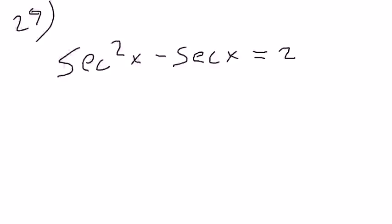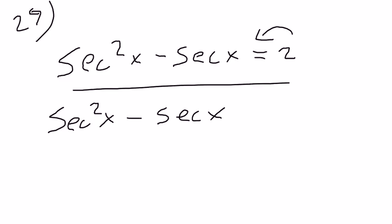Okay, first thing, this is number 29. First thing to do to solve this problem would be to get everything onto the same side. Secant squared x minus secant of x minus 2 equals 0.